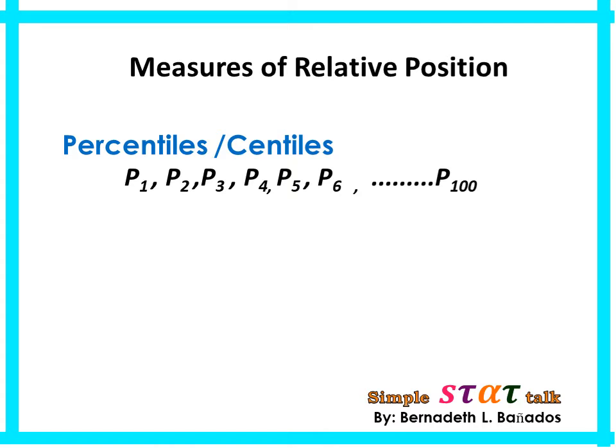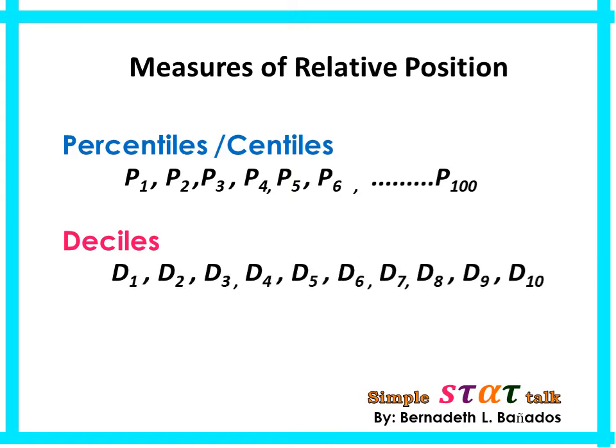This continues until P sub 100, which means the 100th percentile. Another measure is deciles — it divides the data set into 10 equal parts. So if we say D sub 5, that means the fifth decile, and D sub 9 means the ninth decile.